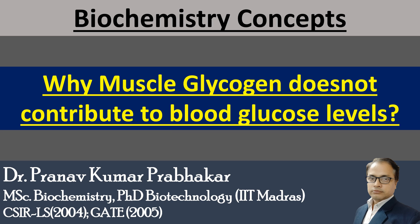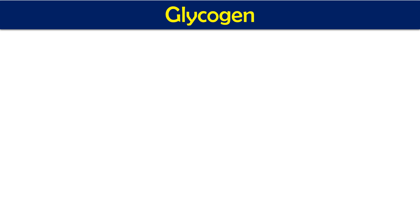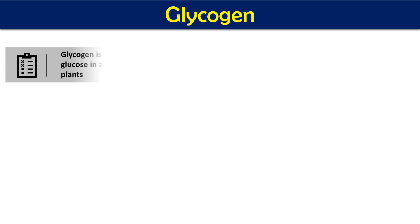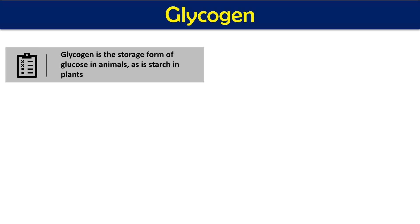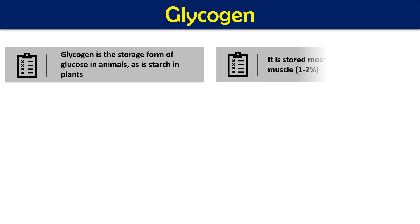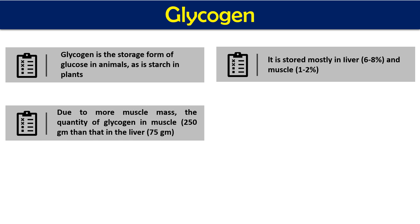We will first look at what glycogen is, then discuss the synthesis and degradation process, and then understand the exact reason. Glycogen is the storage form of glucose in the animal body, similar to starch in plants, and both are homopolysaccharides of glucose. Glycogen is stored mainly in the liver at roughly six to eight percent by weight, and one to two percent in muscles. Because we have more muscle mass, muscle glycogen amounts to more than 250 grams, while liver glycogen is only about 75 grams.